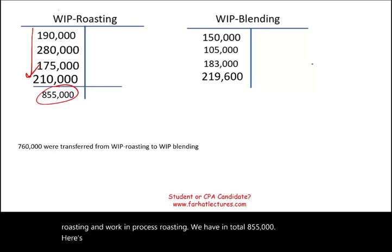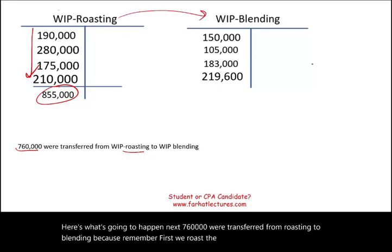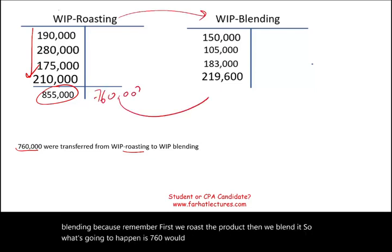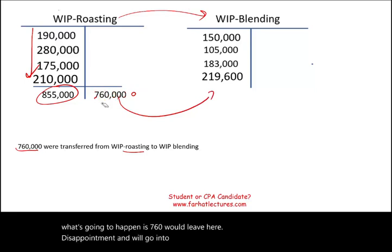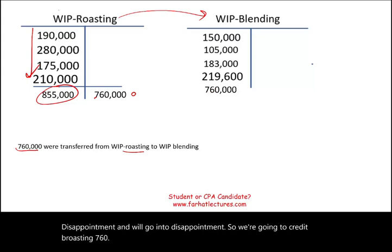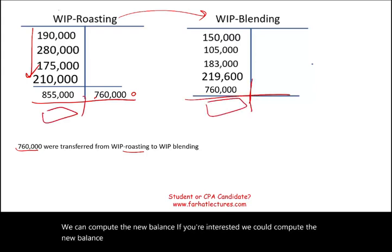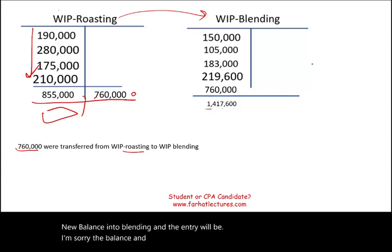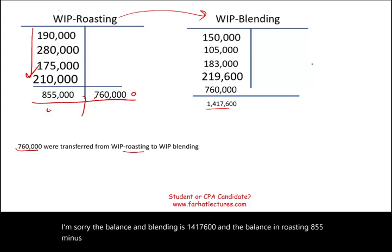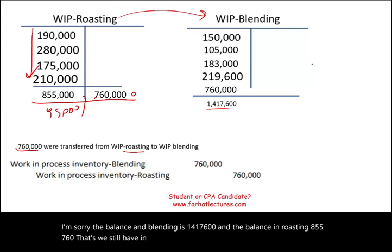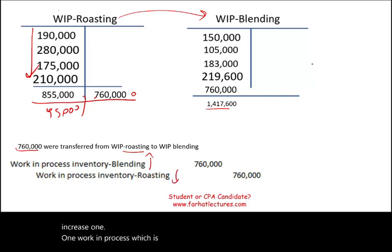$760,000 is transferred from the roasting department to the blending department, because the product is first roasted, then blended. We credit work in process roasting $760,000 and debit work in process blending $760,000. After the transfer, the blending department balance becomes $1,417,600, and the remaining work in process in roasting is $855,000 minus $760,000 = $95,000.